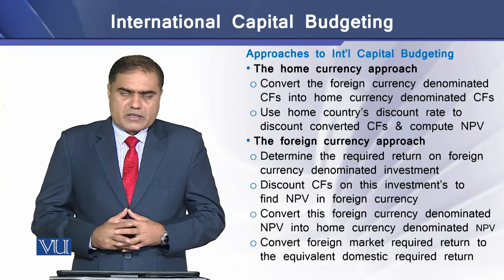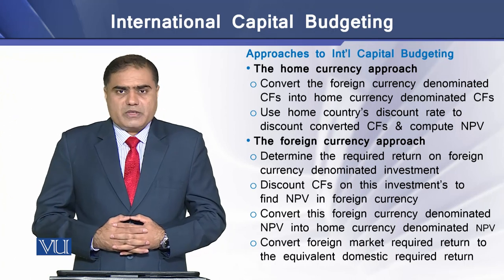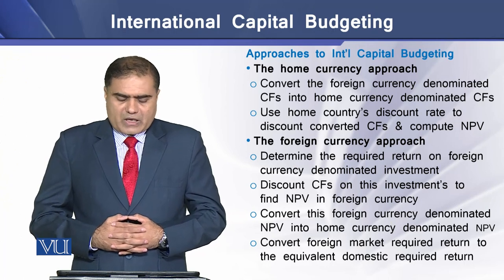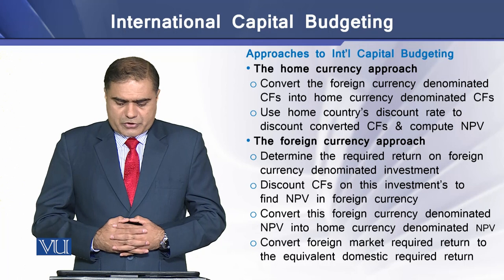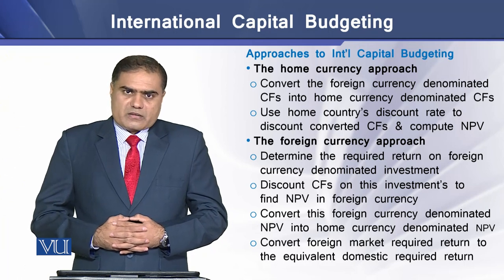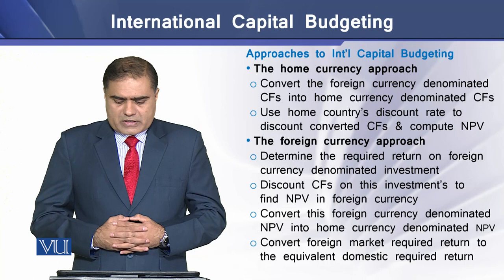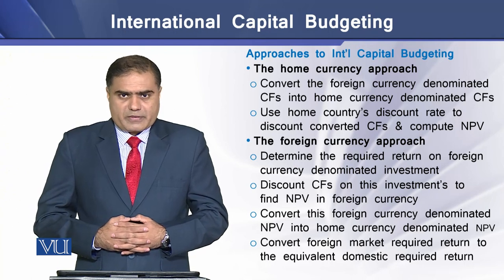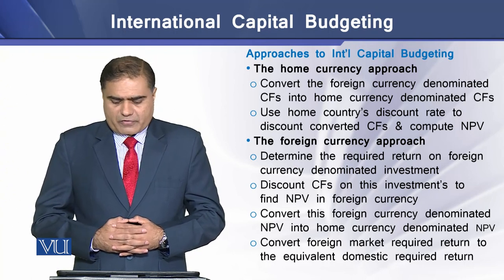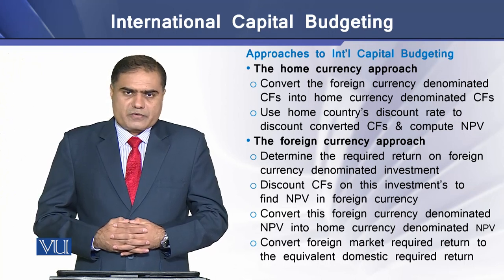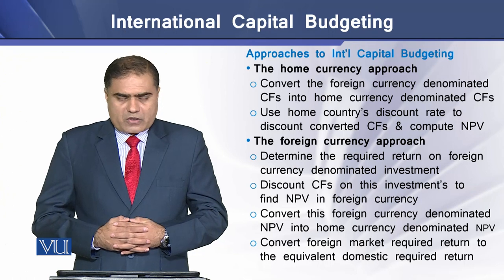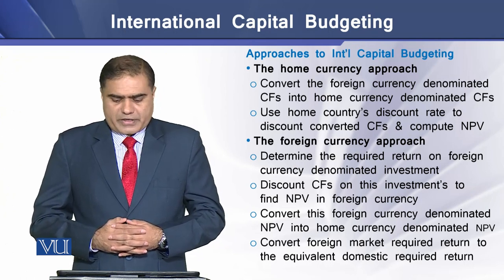The second approach is the foreign currency approach, which has a few more steps. The first is to determine the required return on foreign currency denominated investment. In the second step, we discount cash flows on this investment to find NPV in the foreign currency denomination. In the third step, we convert the foreign currency denominated NPV into home currency denominated NPV. And finally, we convert the foreign market required rate of return to the home country's required rate of return.